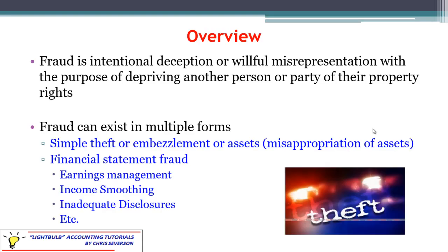Let's talk about what fraud is in general. There are a few different elements of fraud that are important. The first one is the fact that it has to be an intentional deception. Fraud has to be intentional — somebody knows what they're doing and they're trying to deceive whoever the user is of that information. It's the intentional deception or willful misrepresentation — saying something that isn't true with the purpose of depriving another person or party of their property rights.